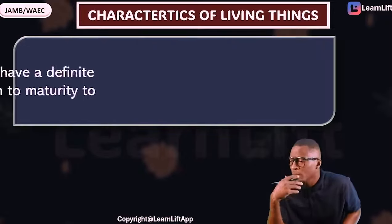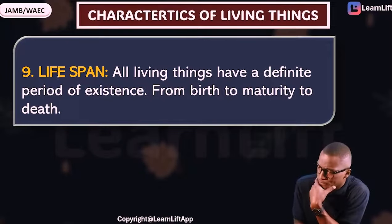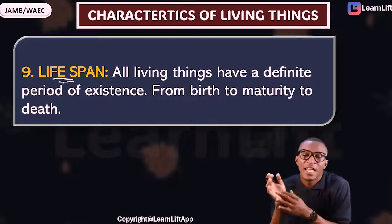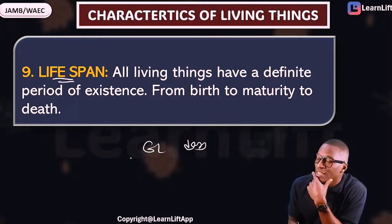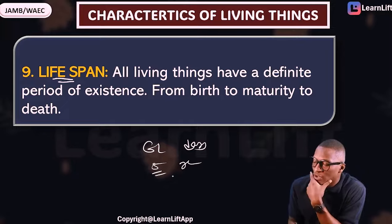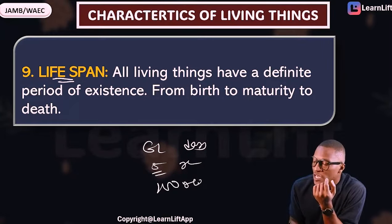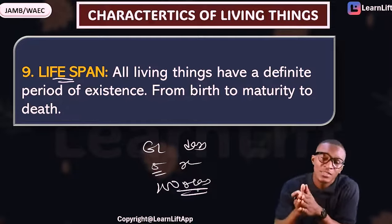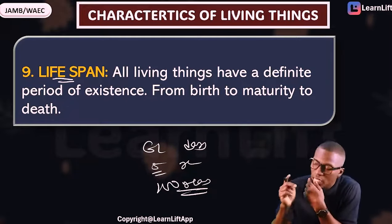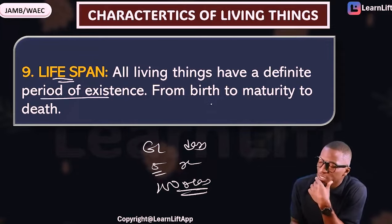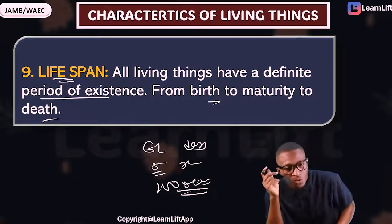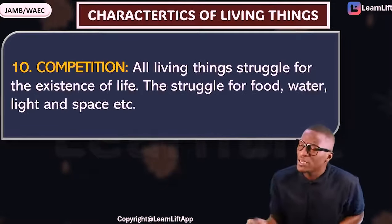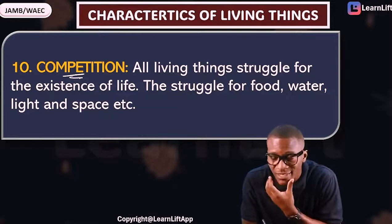Another property of living things is lifespan. All organisms have a lifespan — some organisms have a lifespan of 61 days, some 5 years, some 100 years. The lifespan of rats is not the same as that of other animals. All organisms have a definite period of existence from birth to maturity to death.